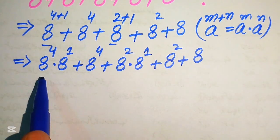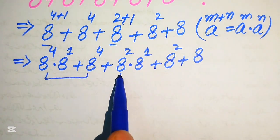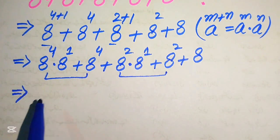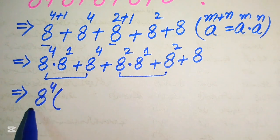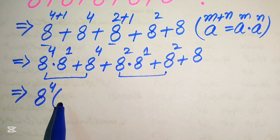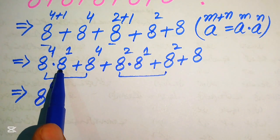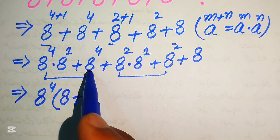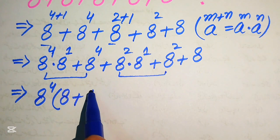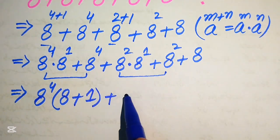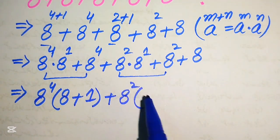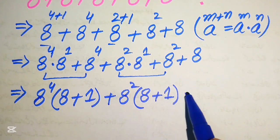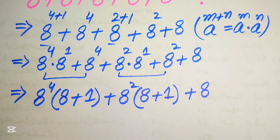Now we focus on the first two terms and the next two terms. We have 8 to the power of 4 as a common term, so we take out 8 to the power of 4. The remaining terms give us: 8 plus 1 from the first group. Then we take out 8 squared from the next group, giving remaining values of 8 plus 1, and we still have our 8 at the end.